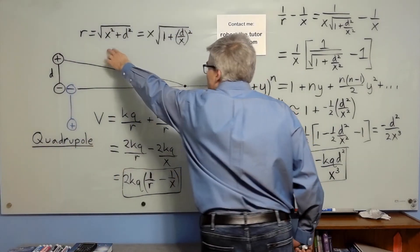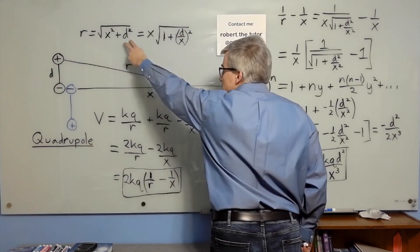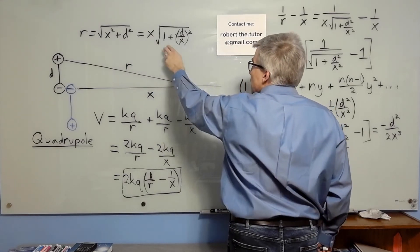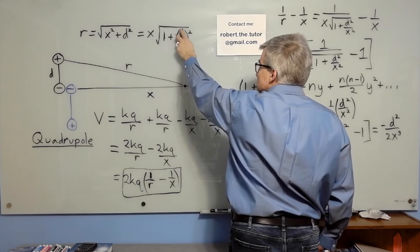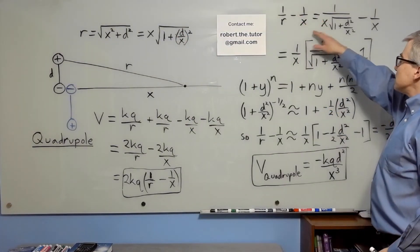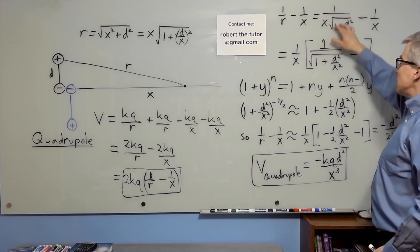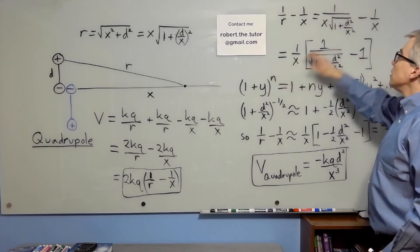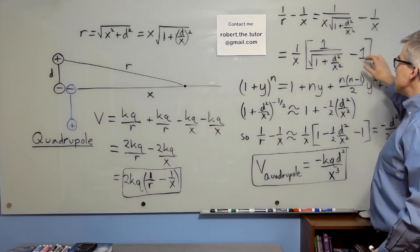So we know that r is the square root of x squared plus d squared from Pythagoras. You can factor an x out, and you get x times square root 1 plus d over x squared. So 1 over r minus 1 over x can be written as 1 over x times this fraction minus 1.